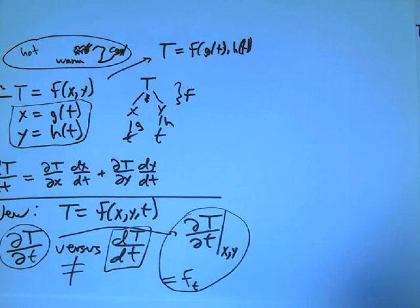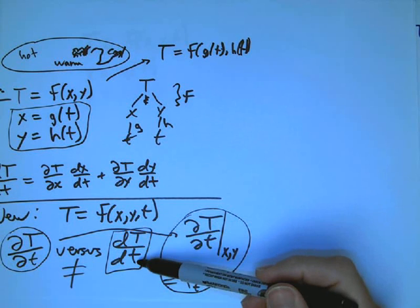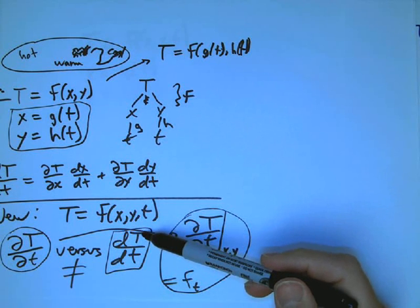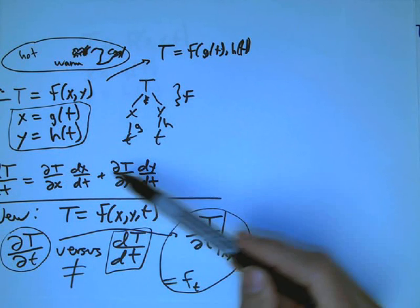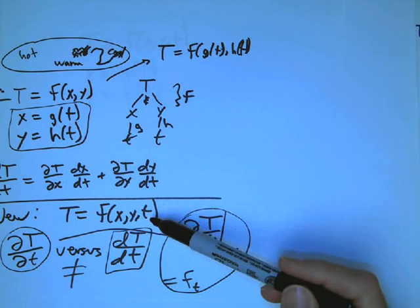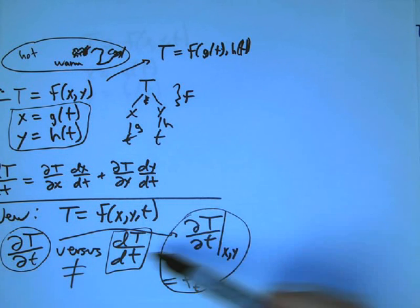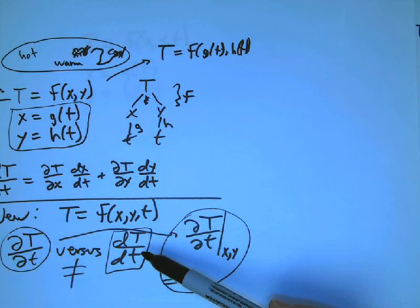Now it makes sense to ask the very same question: as the bug moves, how fast is his temperature changing? There's going to be three reasons why it can change instead of just two like before. The position is changing in x, the position is changing in y, and the time is changing.